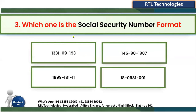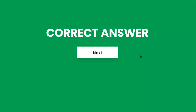The third question: which one is the social security number format? This is like a national identification number — for India it's Aadhaar card, for UK it's NI number, and for the US it's SSN. The correct format is three digits, then two digits, then four digits — that is the social security number format.